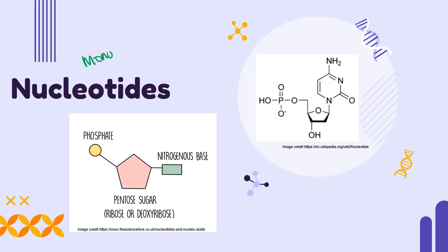The monomers or small individual pieces of nucleic acids, DNA and RNA, are nucleotides. Nucleotides are composed of three main components: a phosphate group, a pentose sugar, and a nitrogenous base.